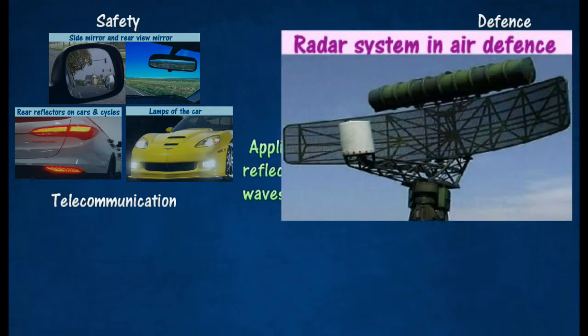A radar system in air defense uses a transmitter at the aerial that emits microwave pulses of high frequency. If these pulses strike any incoming aircraft,